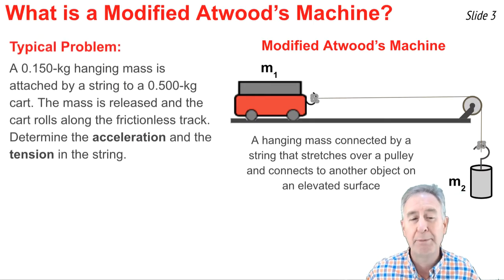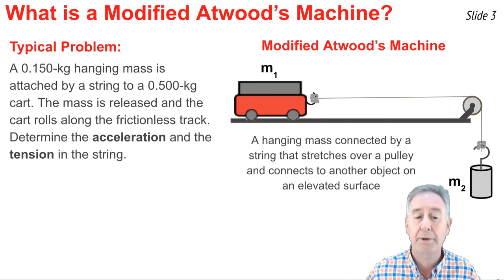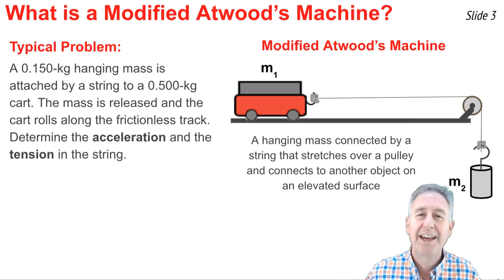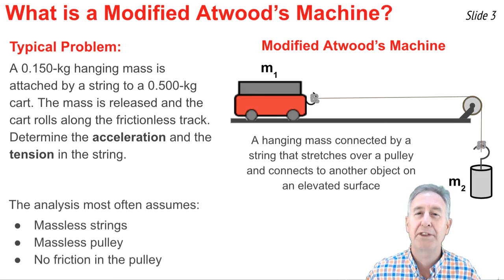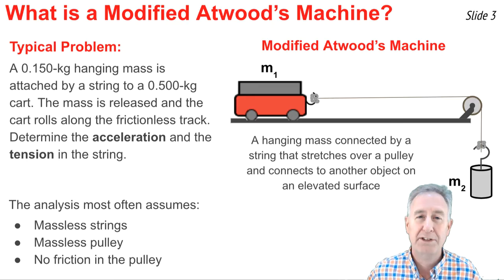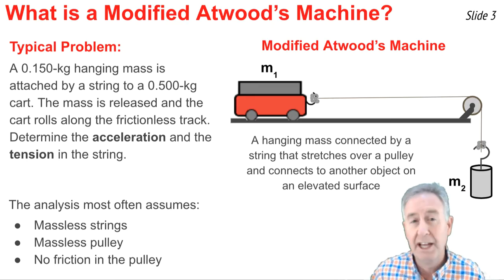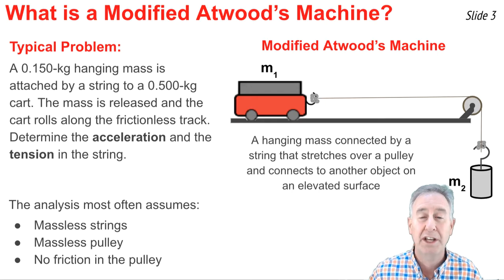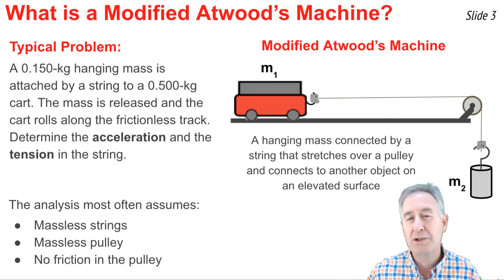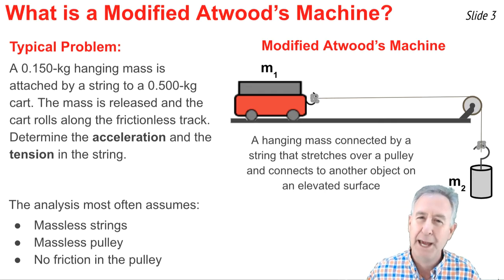Here's a typical Atwood's machine problem. A 0.15 kg hanging mass is attached to a 0.500 kg cart on a table. The mass is released and the cart rolls along the frictionless table. Determine the acceleration and the tension in the string. In problems such as this, we typically assume three things: the string is massless, the pulley is massless and doesn't acquire rotational kinetic energy, and there's no friction in the pulley. These are good approximations that allow us to use Newton's second law.